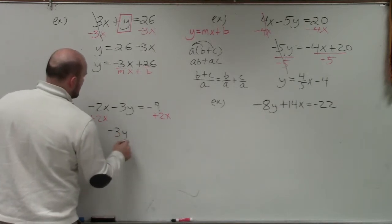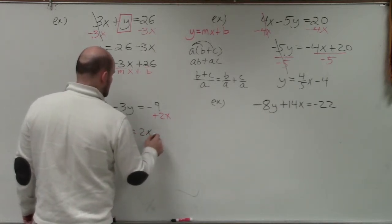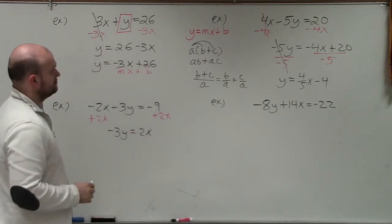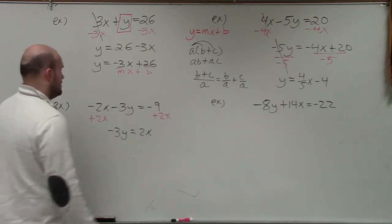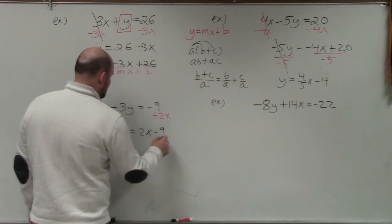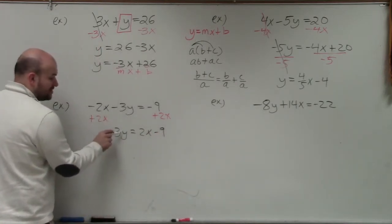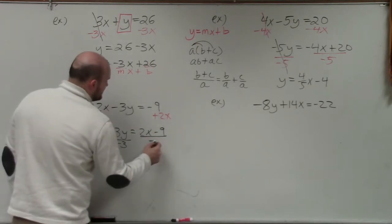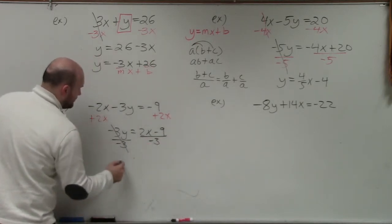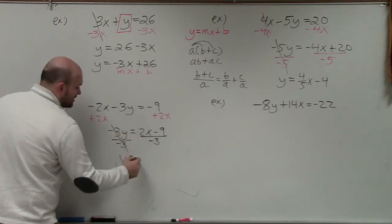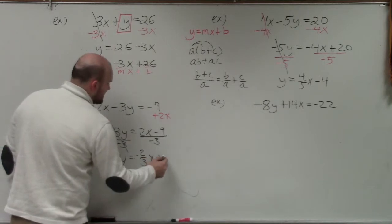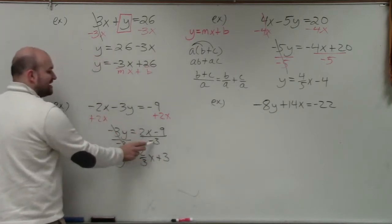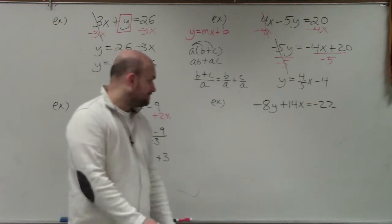Then to undo my y, I'm going to divide by negative 3. Divide by negative 3, those go to 1, y equals. This ends as a fraction, negative 2 thirds x. Negative 9 divided by negative 3 is a positive 3. Make sure you divide that negative 3 into both of those terms.